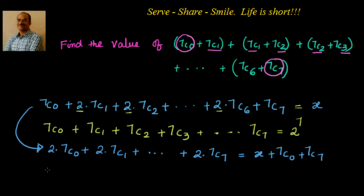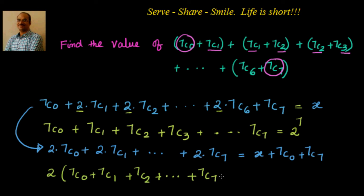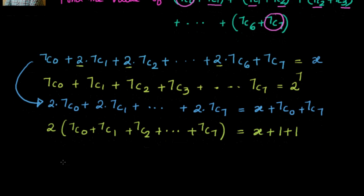Now if I take 2 common, it becomes 2 into (7C0 plus 7C1 plus 7C2 up to 7C7) equals X plus 7C0 plus 7C7. We know 7C0 and 7C7 are both 1, so it is X plus 1 plus 1, that is X plus 2. We already know 7C0 up to 7C7 equals 2 power 7, so substituting: 2 × 2^7 = X + 2, giving 2^8 = X + 2.